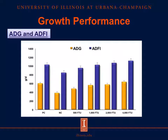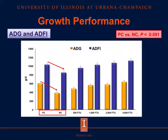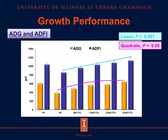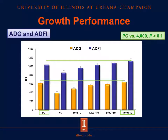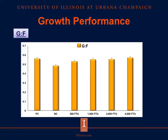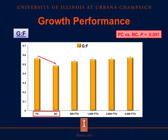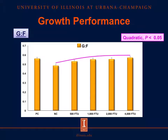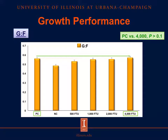The results of average daily gain are represented with the orange bars, and the results of average daily feed intake are represented with the blue bars. Pigs fed the negative control diet had lower average daily gain and average daily feed intake compared with pigs fed the positive control diet. The addition of phytase increased linearly the average daily feed intake and quadratically the average daily gain, so there were no differences between pigs fed the positive control diet and pigs fed the negative control diet plus 4,000 FTU of grain enzyme. The gain-to-feed ratio followed the same pattern: pigs fed the negative control diet had lower gain-to-feed ratio than pigs fed the positive control diet, and gain-to-feed ratio increased linearly as the concentration of phytase added increased, with no differences between the positive control and the negative control plus 4,000 FTU.